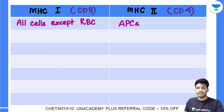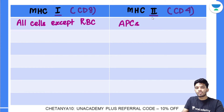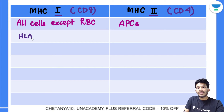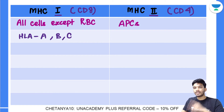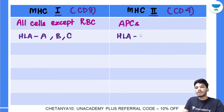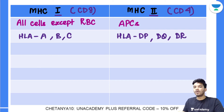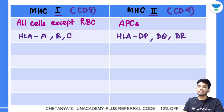For the gene loci, here's a simple way to remember: MHC1 gene loci have one letter — HLA-A, HLA-B, and HLA-C. MHC2 gene loci have two letters — HLA-DP, HLA-DQ, and HLA-DR. So MHC1 has single-letter loci and MHC2 has two-letter loci.